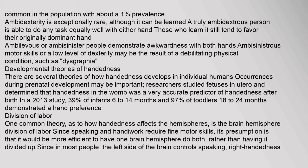One common theory as to how handedness affects the hemispheres is the brain hemisphere division of labor. Since speaking and handiwork require fine motor skills, the presumption is that it would be more efficient to have one brain hemisphere do both, rather than having it divided up. Since in most people the left side of the brain controls speaking, right-handedness predominates.